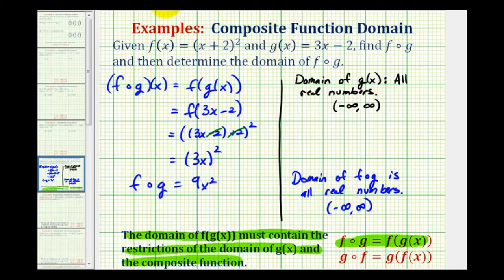So this is one example where if we did not consider the domain of the inner function, or g of x, we would have been okay by just finding the domain of our composite function. But what we'll see in the next few examples is this is not always the case. So it is important that we also consider the restrictions on the inner function.